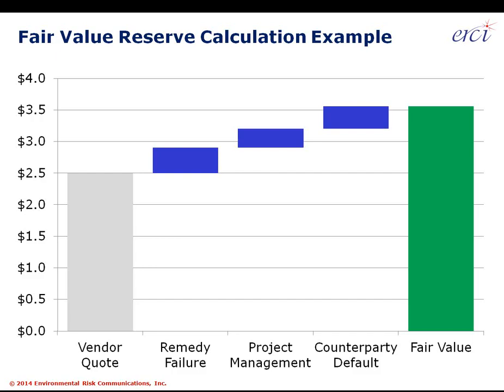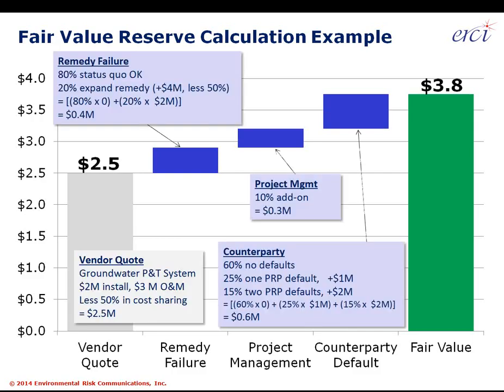Instead, there is a requirement to think about and evaluate each site individually — pull out an Excel spreadsheet for each site and make sure that contingencies like remedy failure, project management, and counterparty default are all factored in with whatever unique site-specific attributes are required to reach a fair value calculation of what the market would charge to take on that liability. This work normally has to be done site by site. We normally start and finish within an hour to get from an original vendor quote to a fair value measurement.